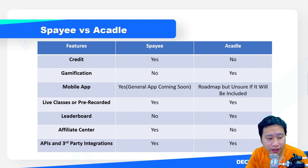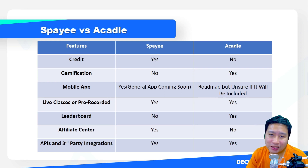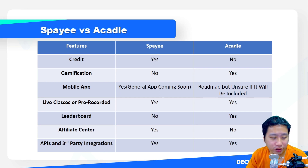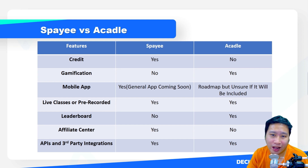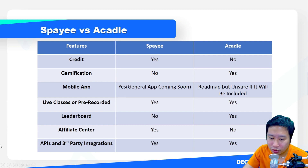There are API and third-party integrations available within both Spayee and Acadle, but it depends on the plan that you have. Additionally, Acadle does have webhooks, which is not available in Spayee itself.